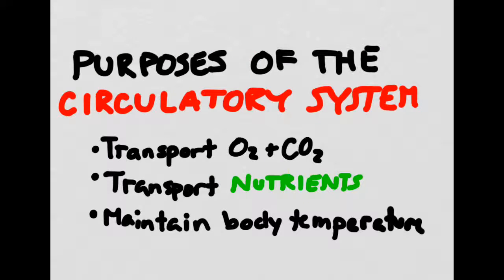To make sure that we all start off on the right foot, I should probably go over a couple of purposes of the circulatory system. The three major purposes of the circulatory system are to transport oxygen and carbon dioxide all around the body, to transport nutrients like sugars all around the body, and also to help maintain body temperature.